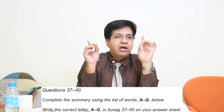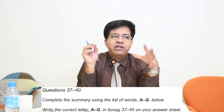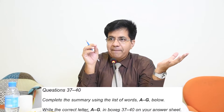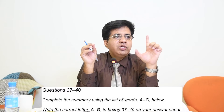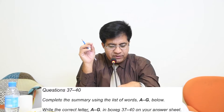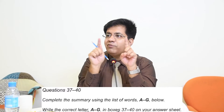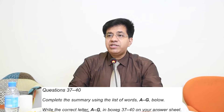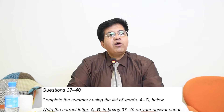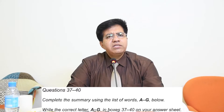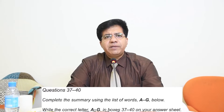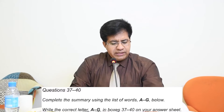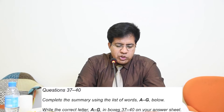Now we have questions 37 to 40 and there are two types of summary completion questions. Number one: summary completion where you select the word from the passage — that is easy. Number two: summary completion where you select a word from the passage, then match it with one of the given words and decide the synonym. This takes more time, but don't worry. Questions and answers are in order in summary completion, just like any completion question — flowchart, sentence, notes, table completion.